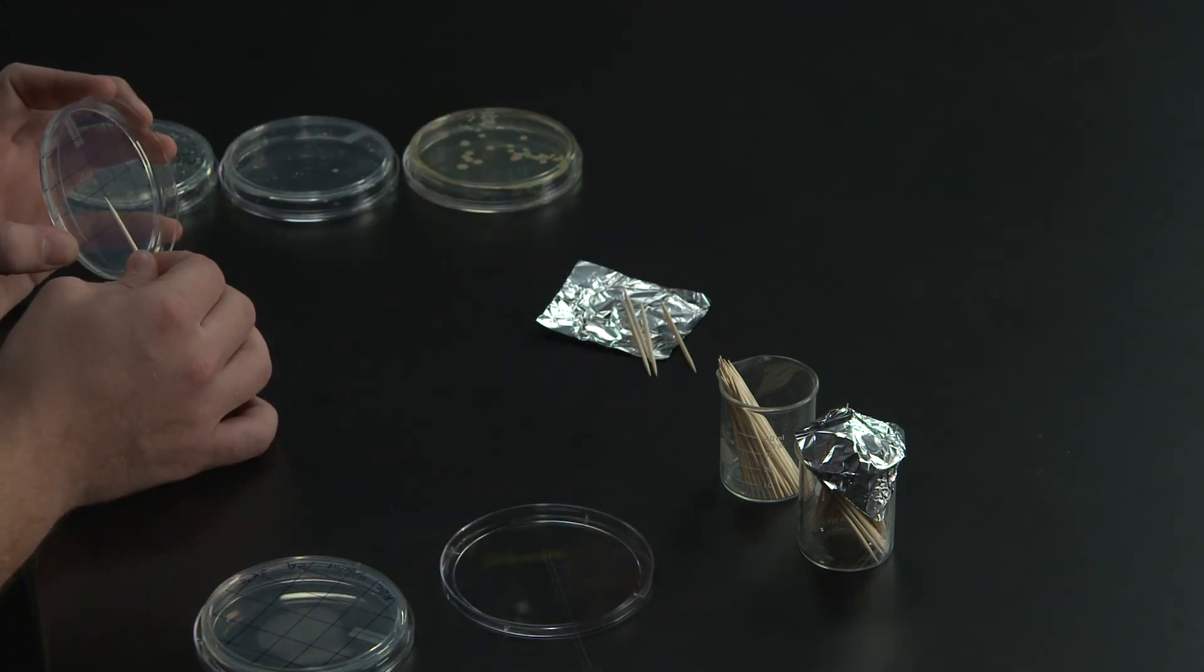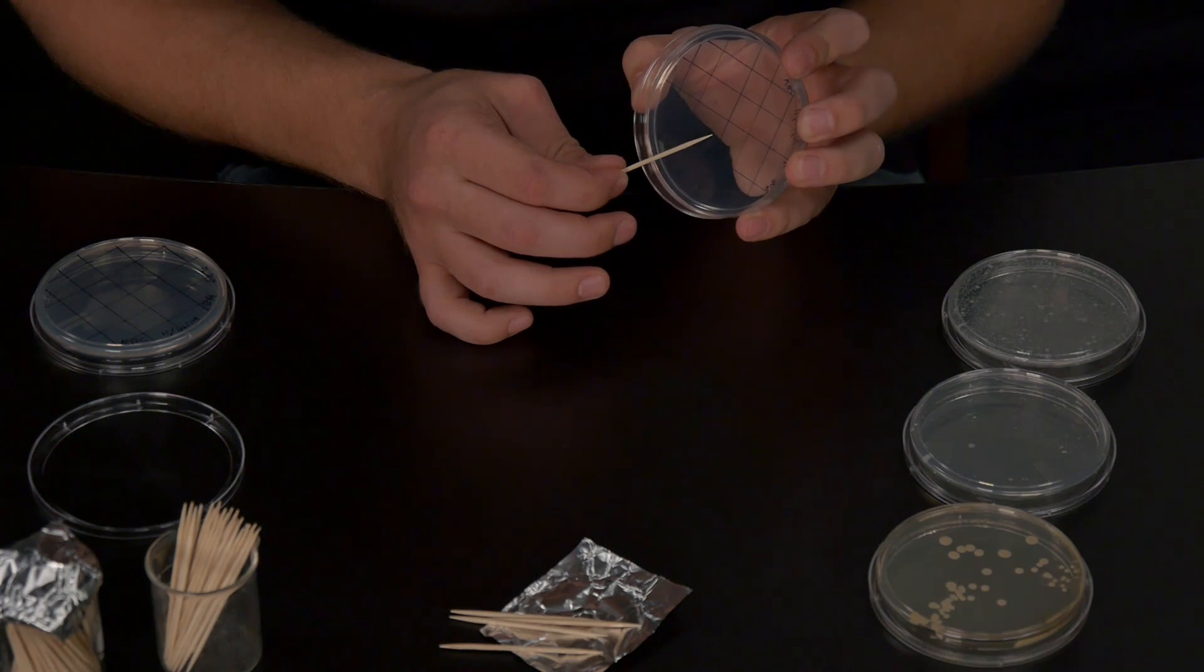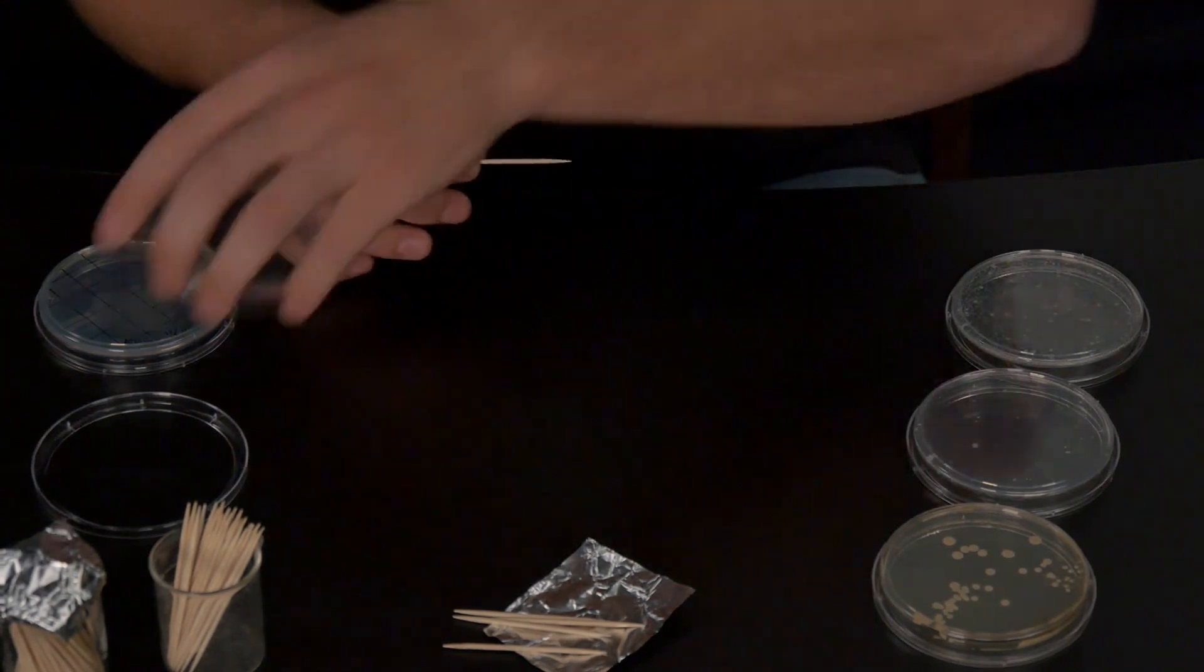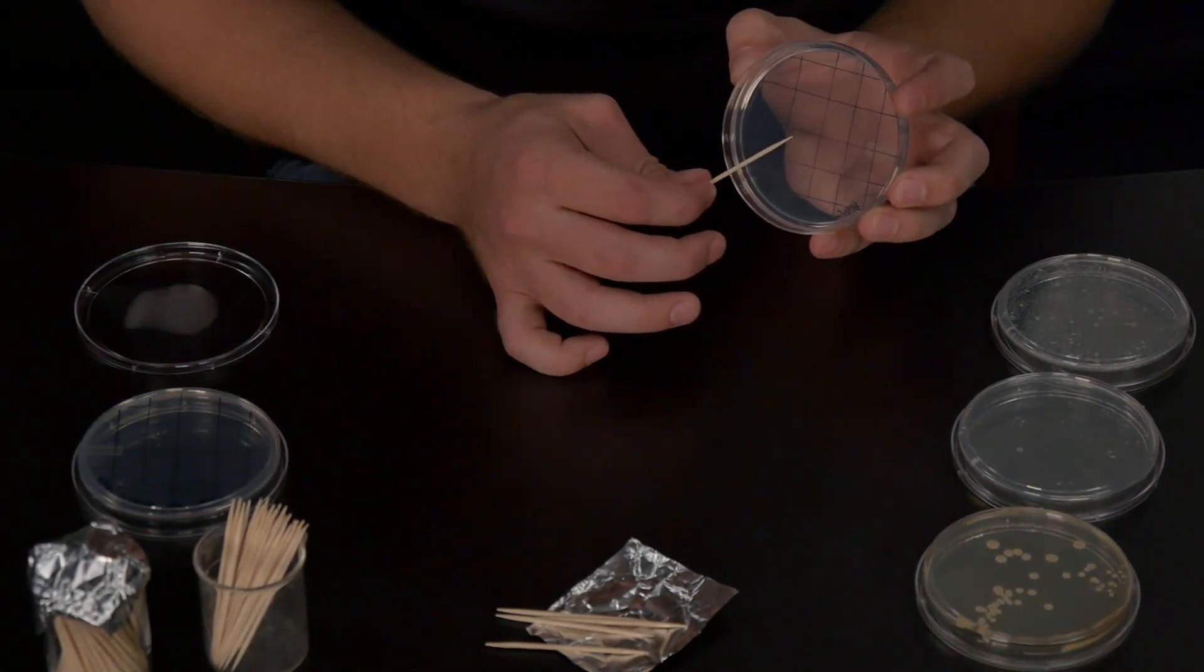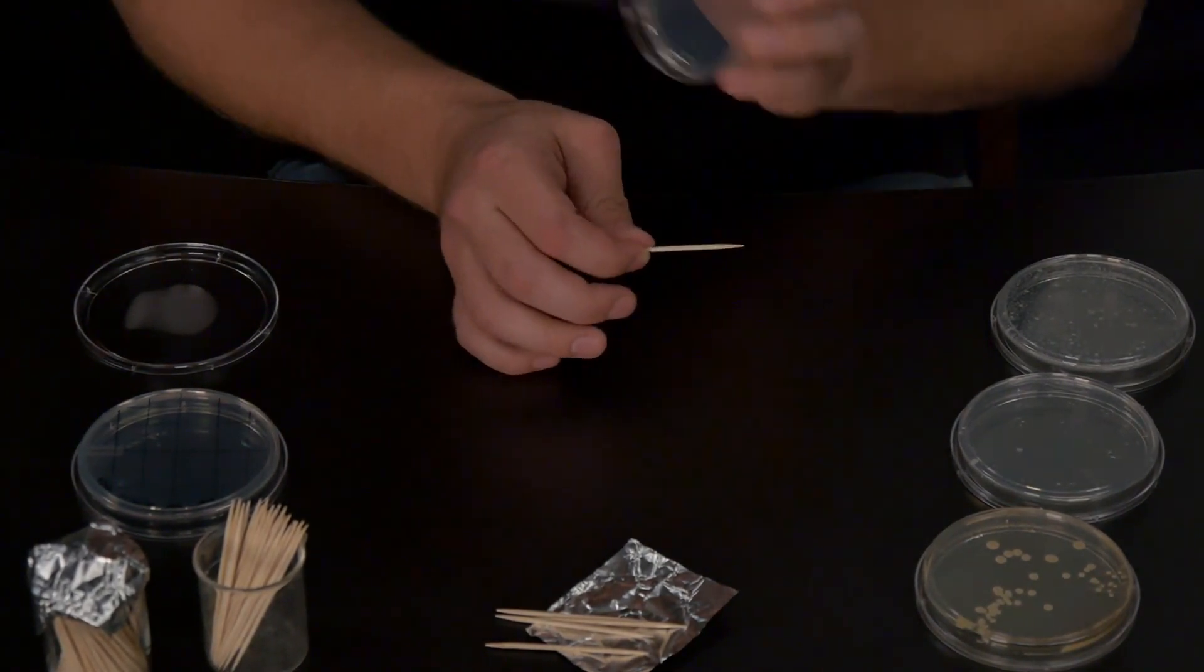As you spread the bacteria within each grid space using your toothpick, leave enough room for the bacteria to grow. Do not spread them too close to the edge of the grid for fear that they will grow into the neighboring spaces.